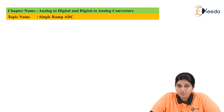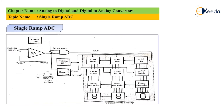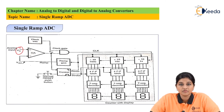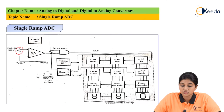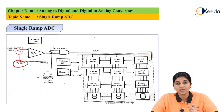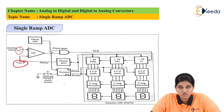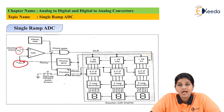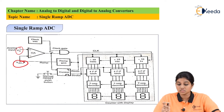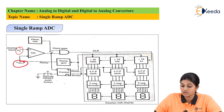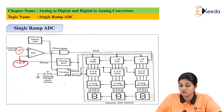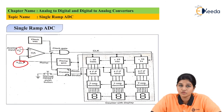Now let's look at the block diagram of the single slope ADC. This type of ADC is used to compare the reference signal Vx with the unknown signal VA. The time required for conversion of the signal is called the conversion time — if conversion time is less, the speed of operation and resolution of the system are both higher. This type of ADC uses a comparator, clock oscillator, AND gate, ramp generator, control logic, and decade counter.